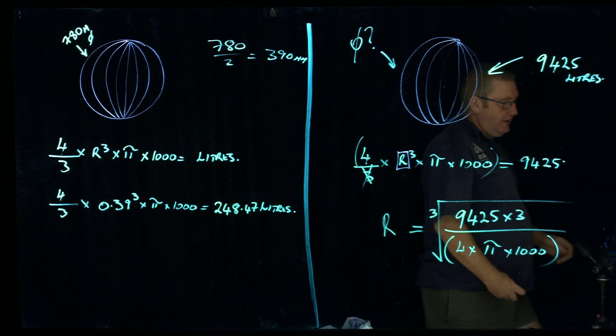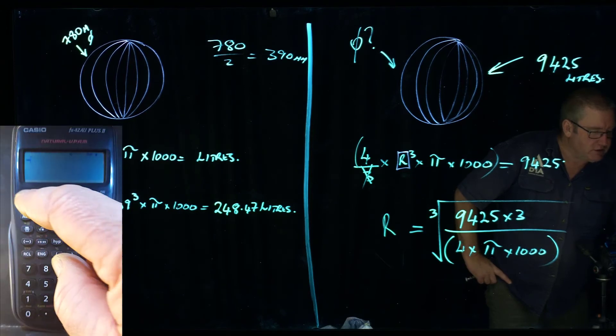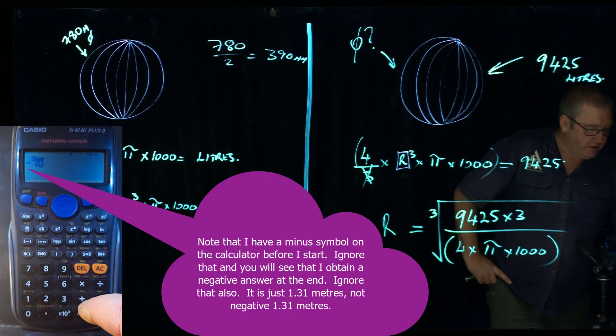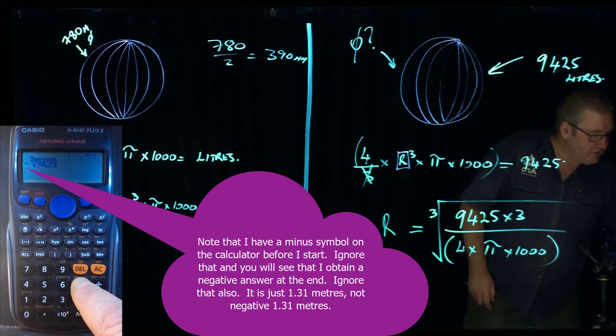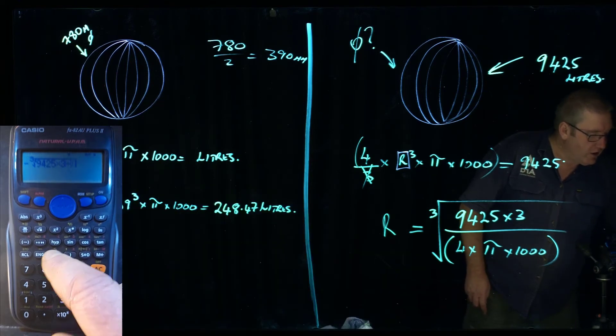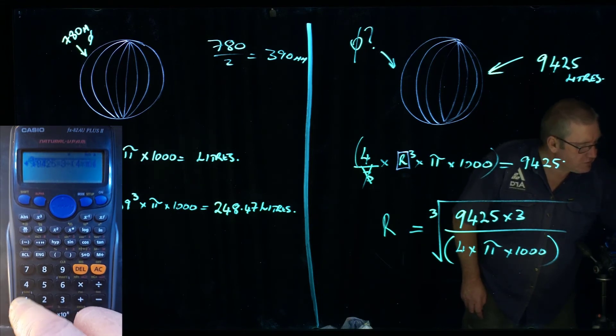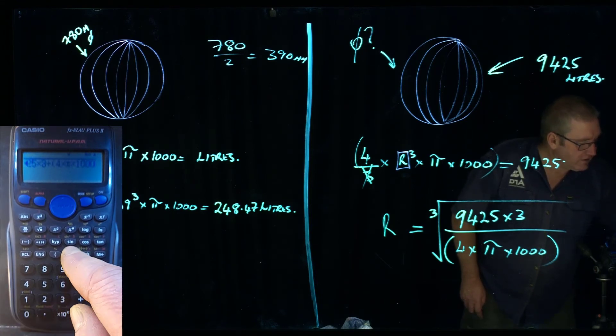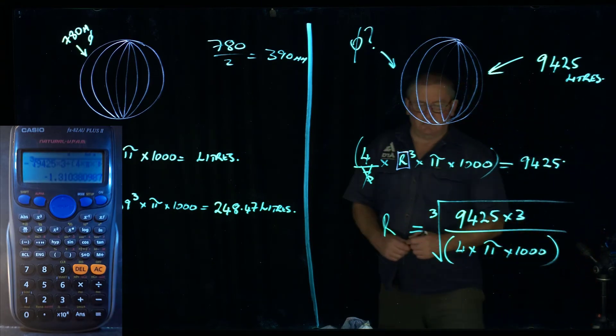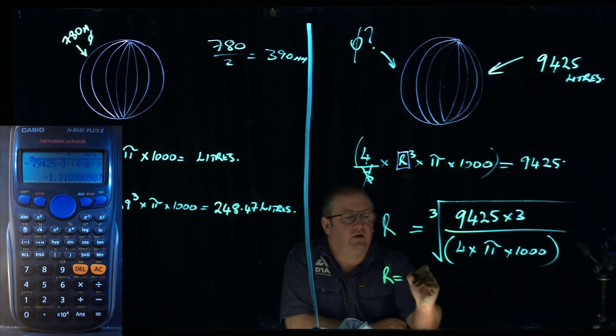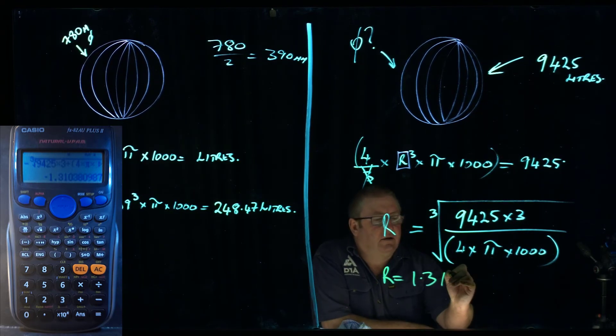So on the calculator, we're looking for the cube root. It's got a square root symbol, and just above that, it's got a 3 in front of the square root symbol. So we're going to push shift 9,425 times 3 divided by open bracket 4 times pi times 1,000. Close the bracket. Equals. And what it's given me is the radius equals 1.310 meters.